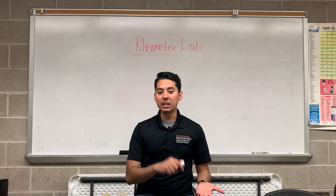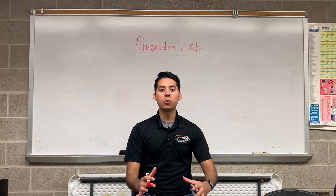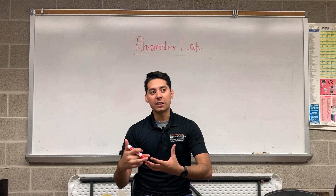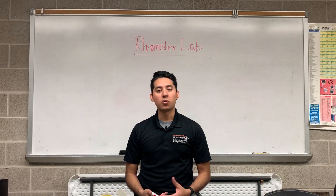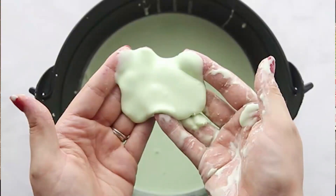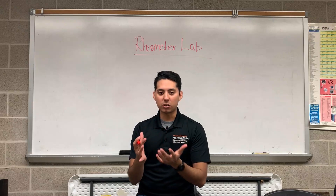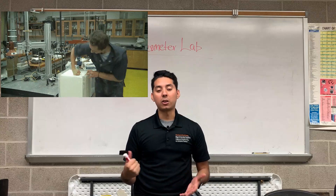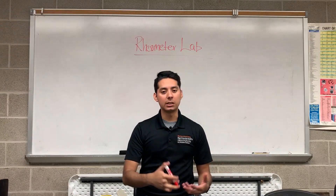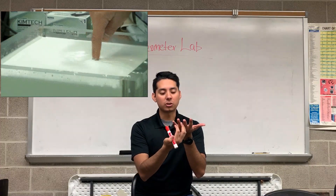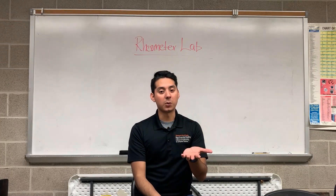A dilatant is a fluid in which the faster you move, the more stress you apply, the harder or more viscous it becomes. One example is cornstarch and water. If you hit that mixture really hard, your hands will bounce back because it's acting more like a solid — it has high viscosity. But when you just put your hand in and let it flow, it will flow down your fingers as if it were a liquid.